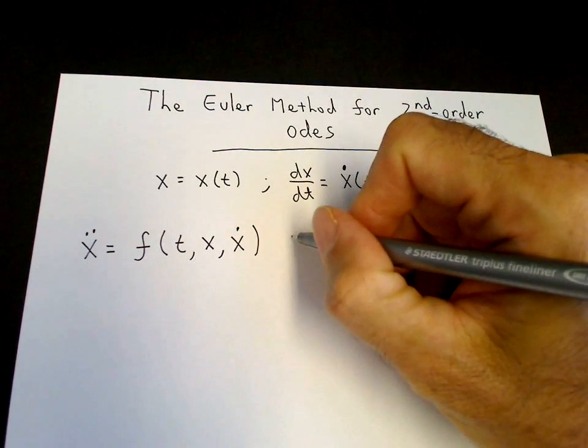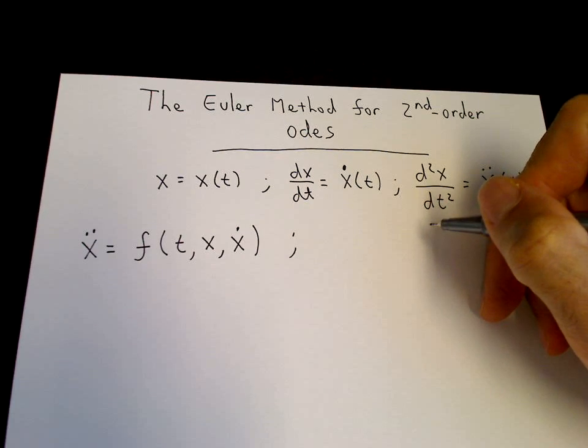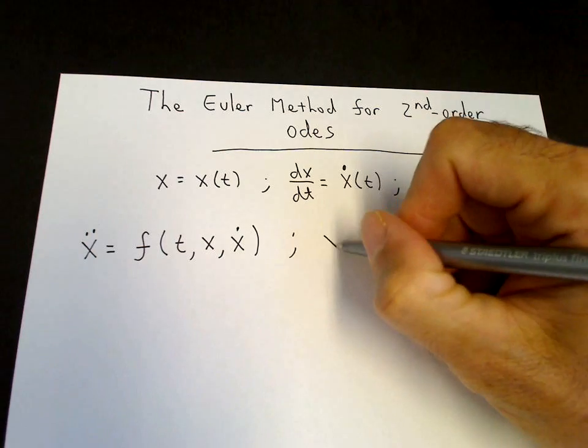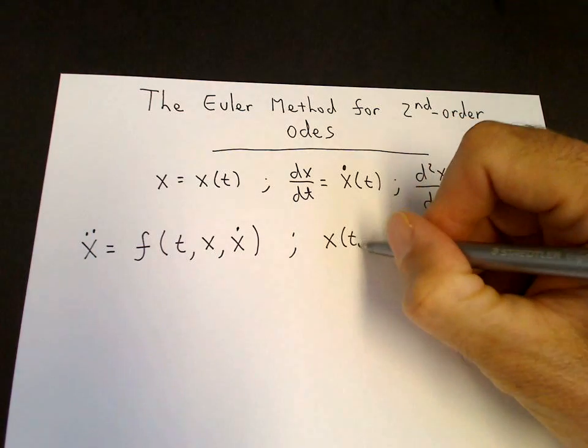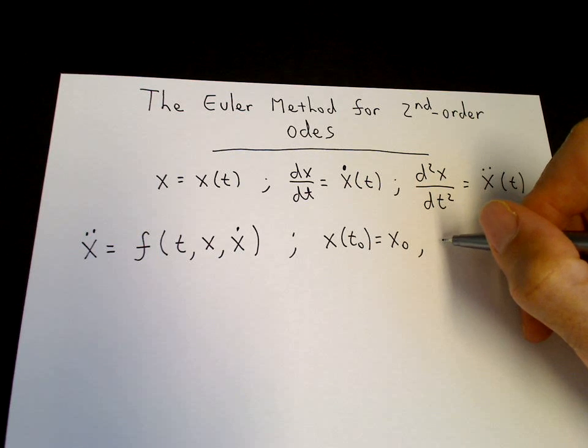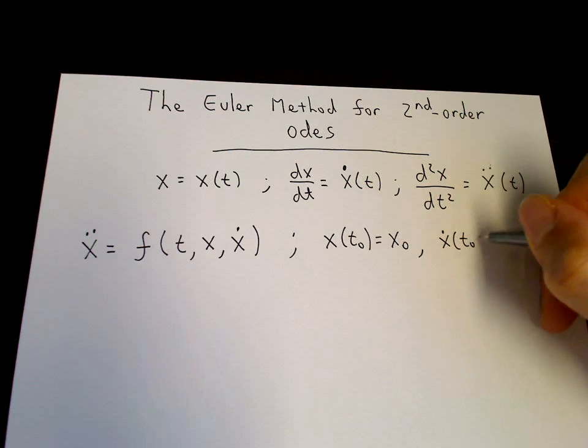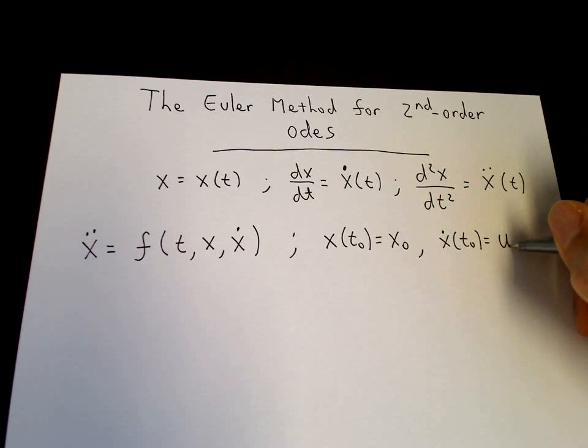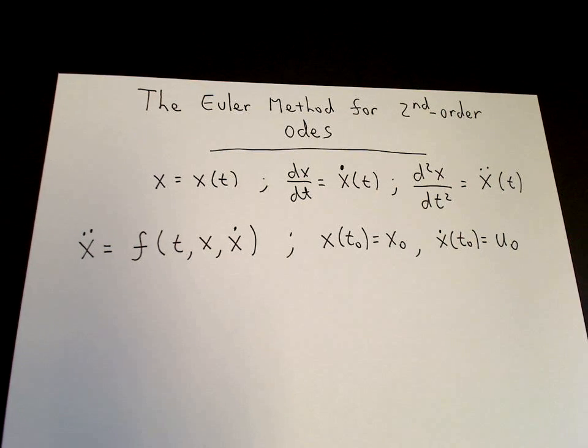By the way, we also need initial conditions to have a unique solution here. So we have x of t naught equals x naught and x dot of t naught equals u naught. So those are initial conditions.